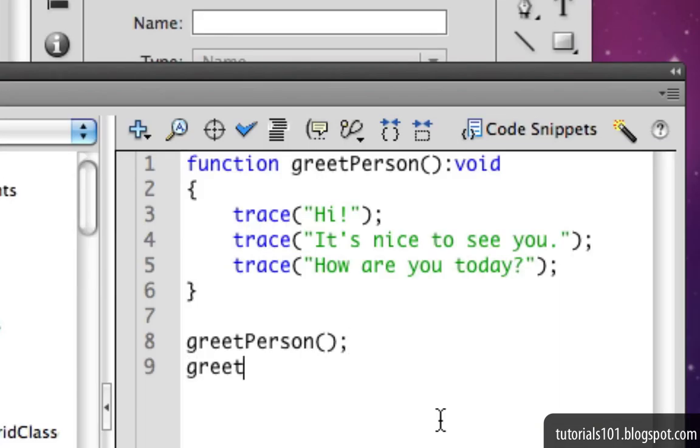If I go back to the code and add another function call, you'll see that all the messages are displayed twice when I test the movie again.